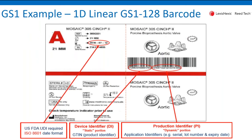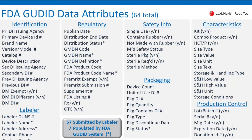Here's another example of UDI being placed on a medical device label — this one happens to be the one-dimensional barcode — showing the difference in the presentation of that data and the content. When you compare that to the data attributes that need to be reported, there are a number of attributes categorized by identification of the product, the labeler, regulatory information, safety information, packaging, various characteristics of the medical device, and production control attributes — all of these particular attributes need to be submitted to the FDA. This does present somewhat of a challenge in collecting that information and making sure it's clean and ready for submission.